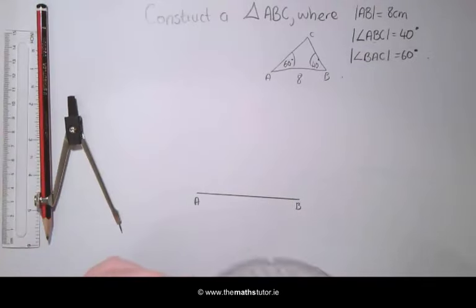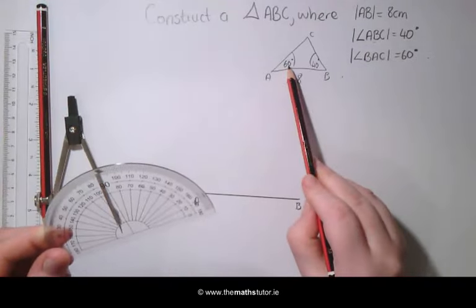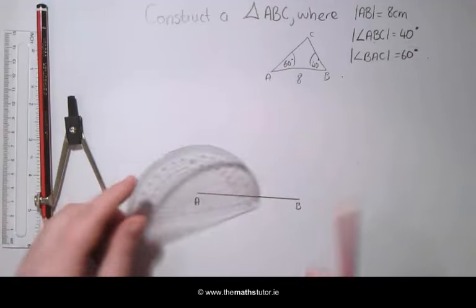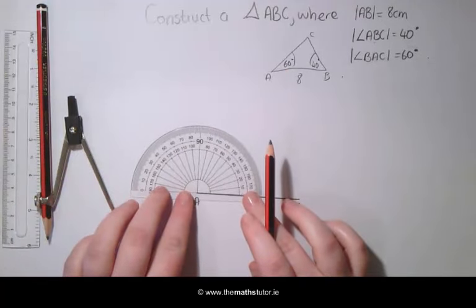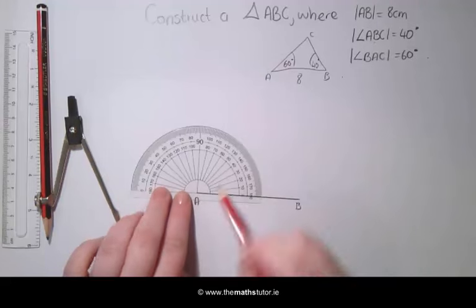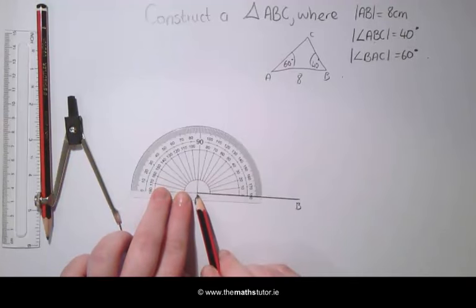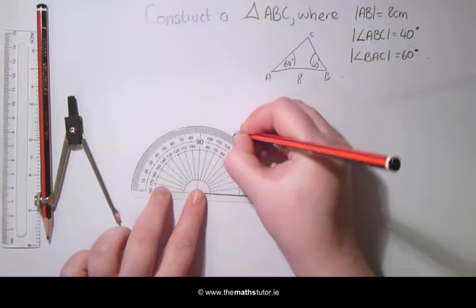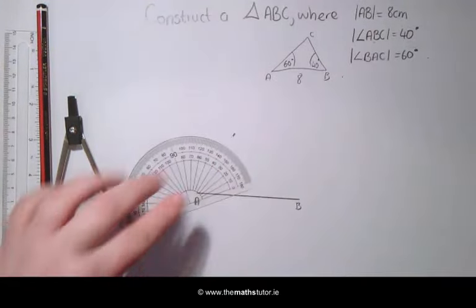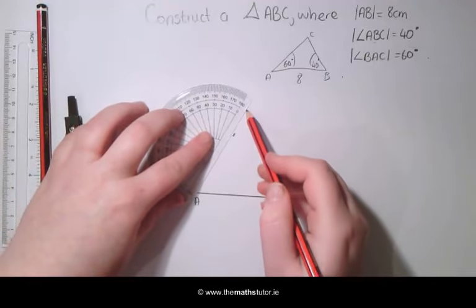We then use our protractor and we are going to draw an angle of 60 degrees at our point A. Making sure our protractor is set up at the center, we draw a marker at 60 degrees and draw a line through this.